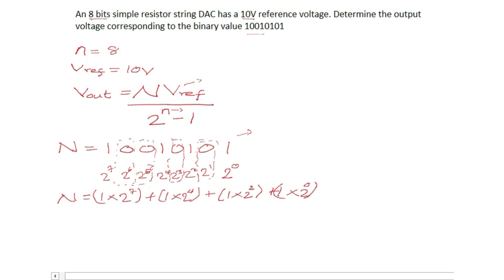Then this one is zero, the next one plus 1 times 2 raised to power 0. Yes, now we can perform our multiplication, addition and all the rest.